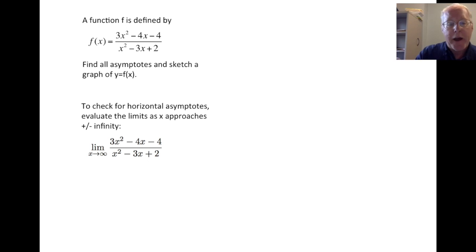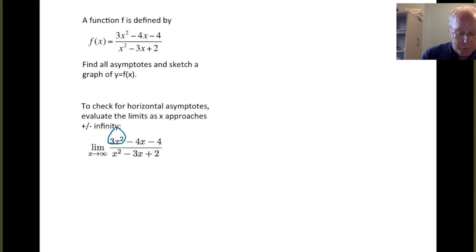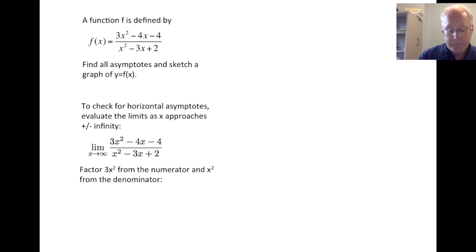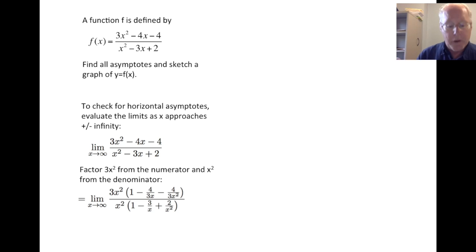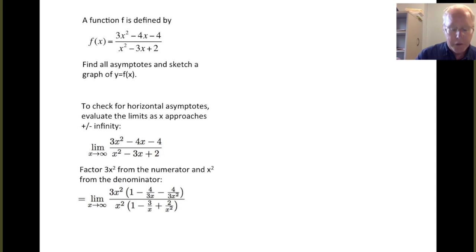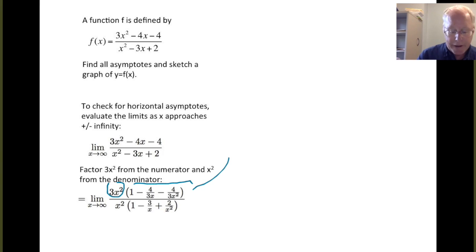Now we're going to start by looking at the highest order terms in the numerator and denominator. That's 3x squared and x squared. We're going to factor 3x squared out of the numerator and x squared out of the denominator. So doing the factorization gives us the following — you can check this and you should. If I multiply the 3x squared by the stuff in these parentheses and simplify, I get the original numerator back, and the same works for the denominator.